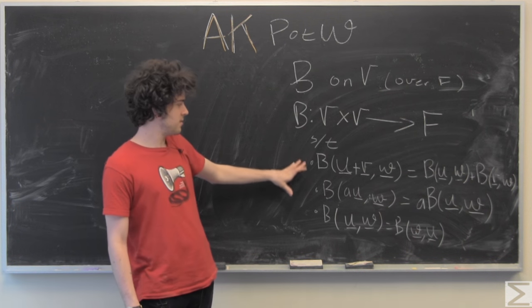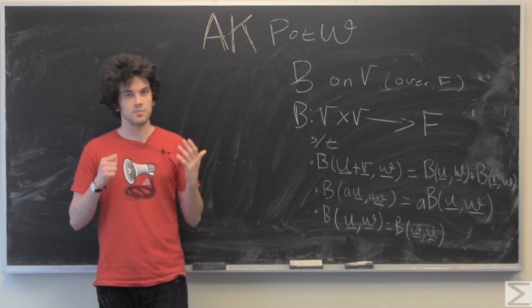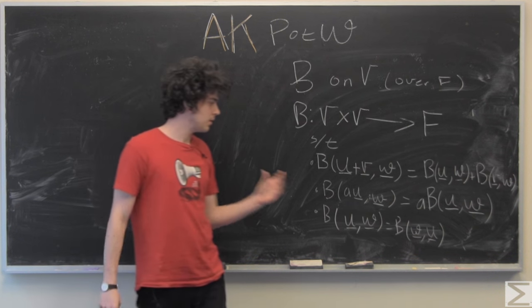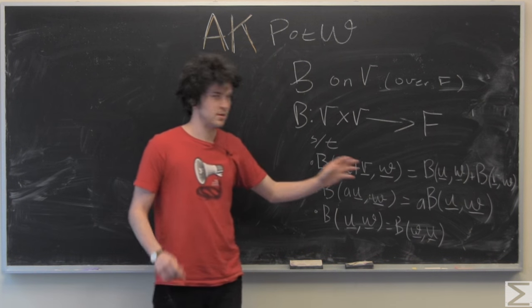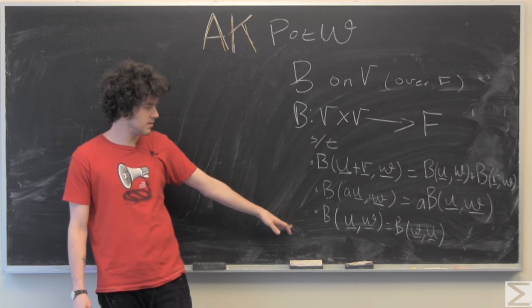But anyways, a bilinear form, if you just look at it, it's bilinear. So both of them are linear in their own respect. So that means that it satisfies these three axioms.